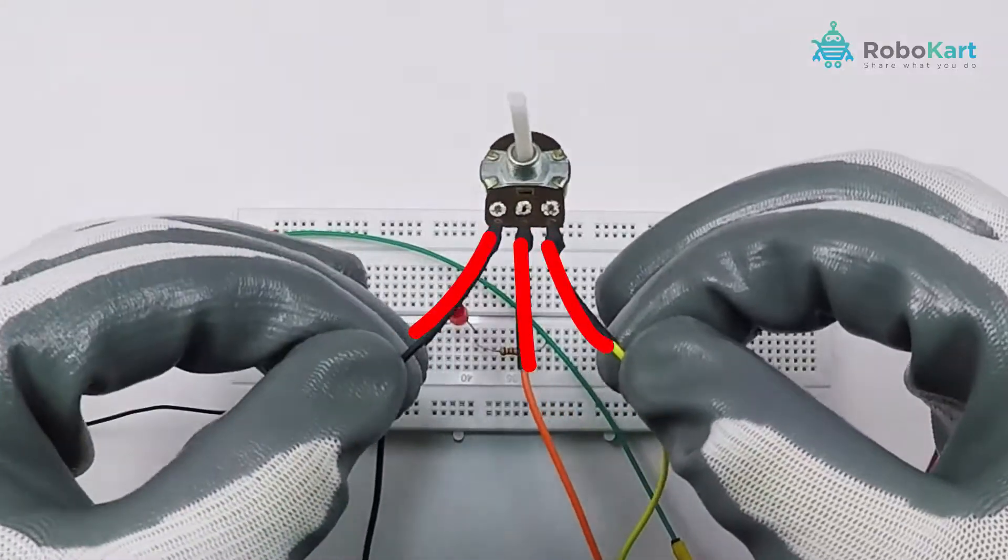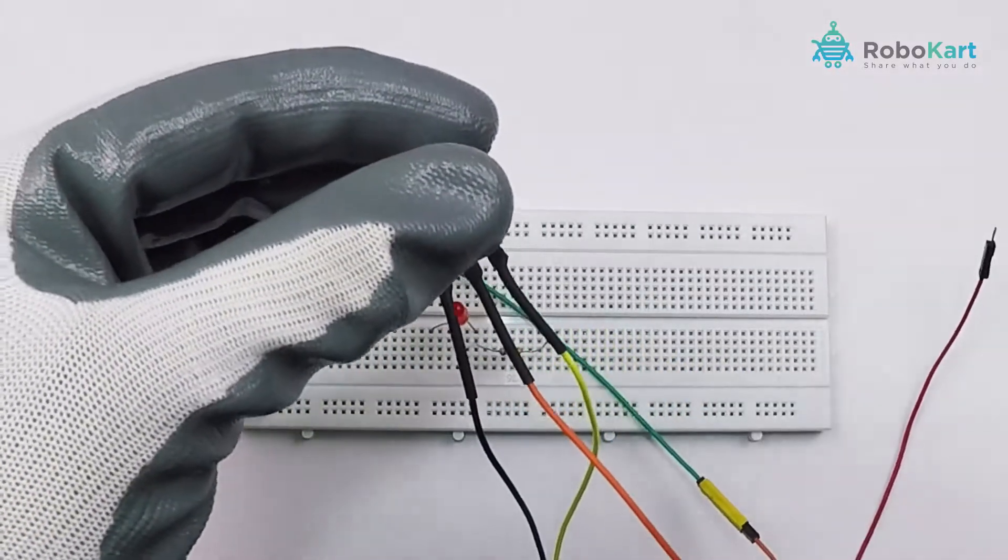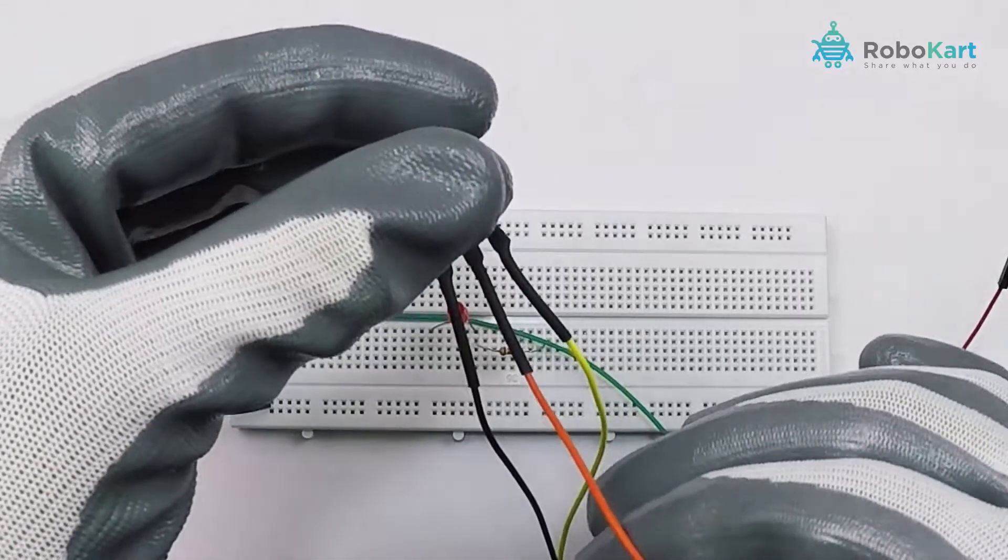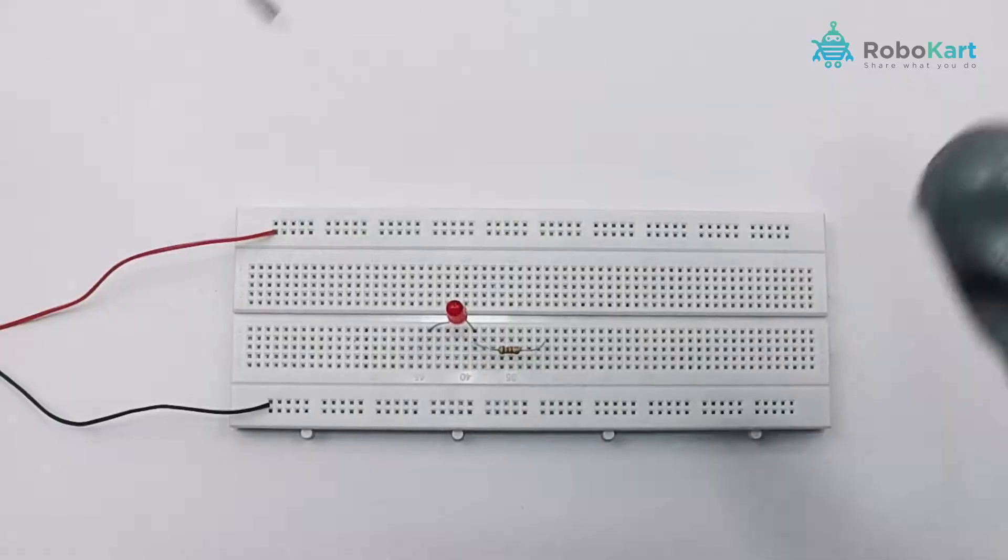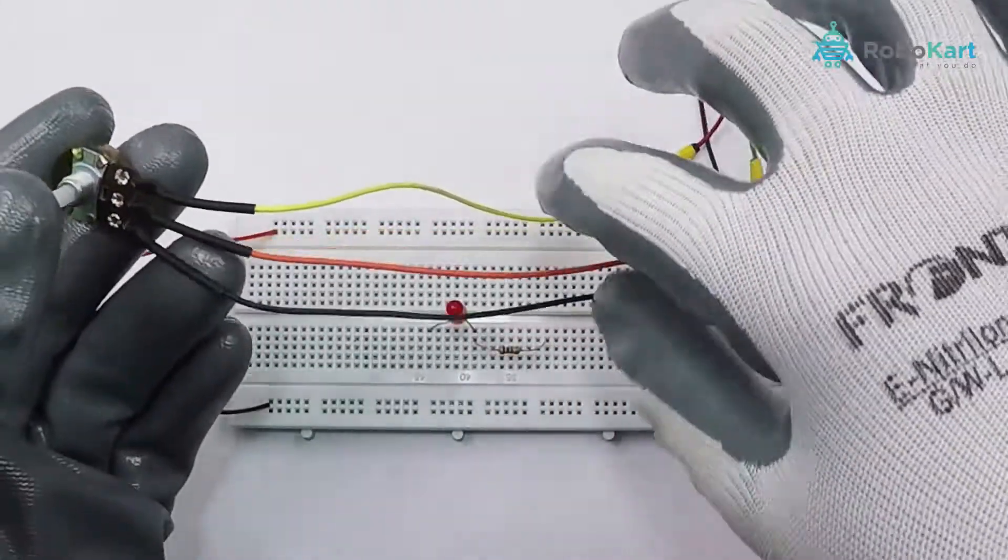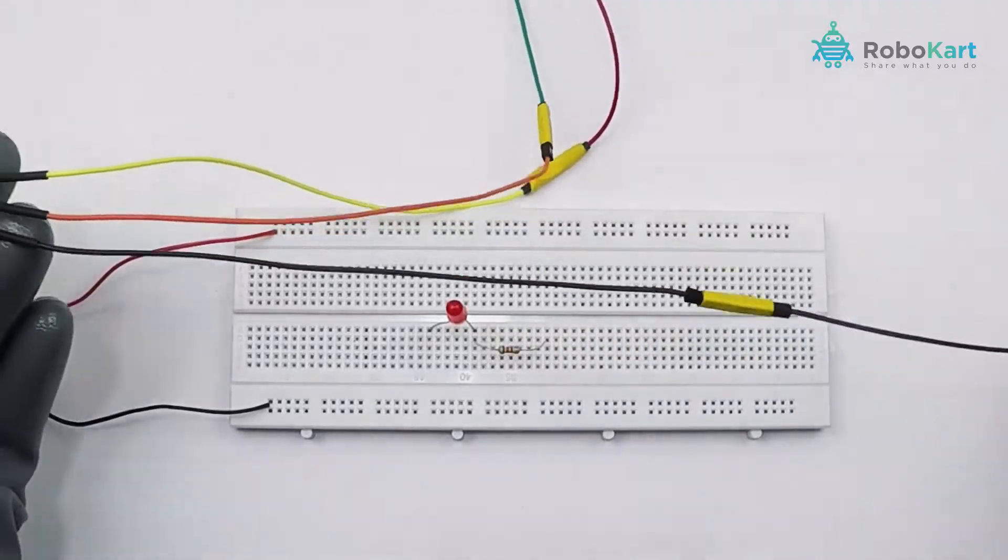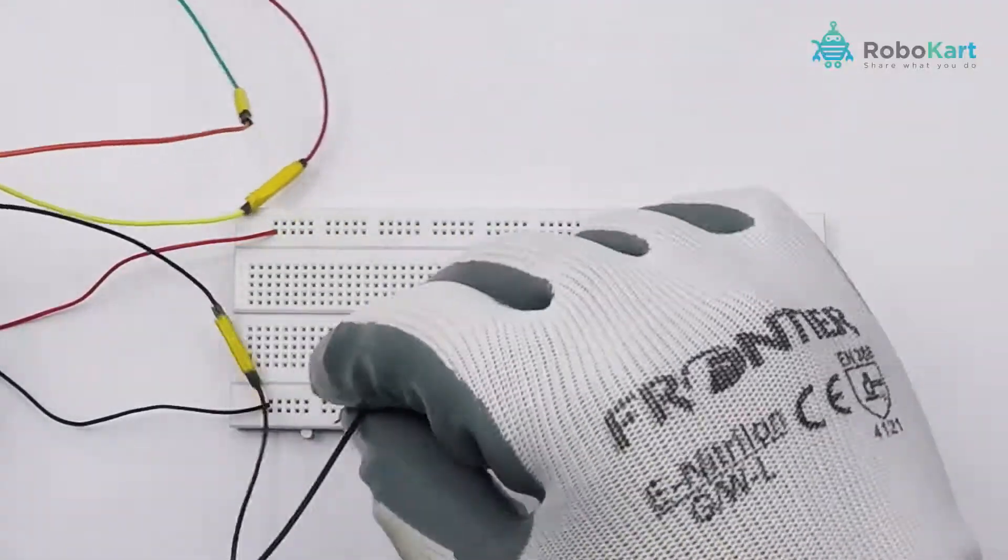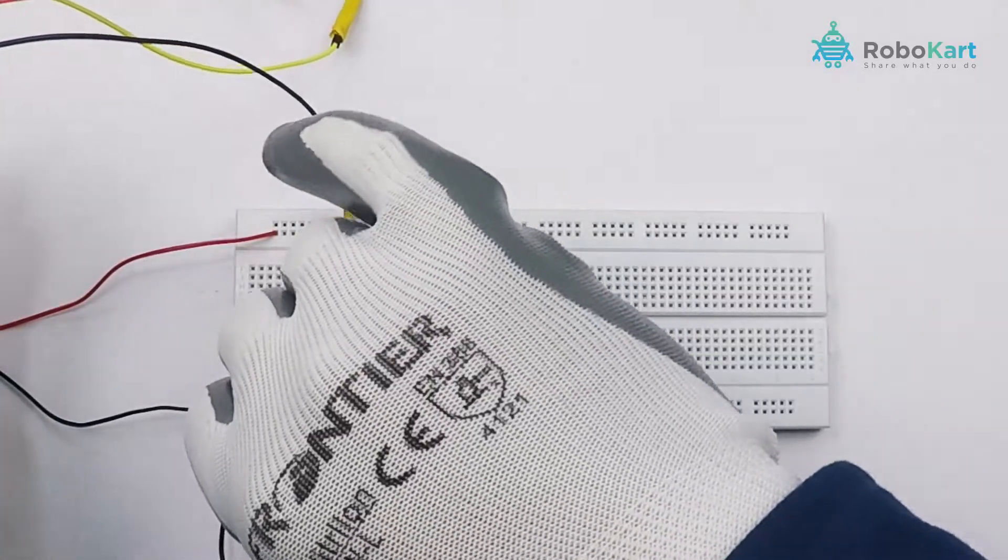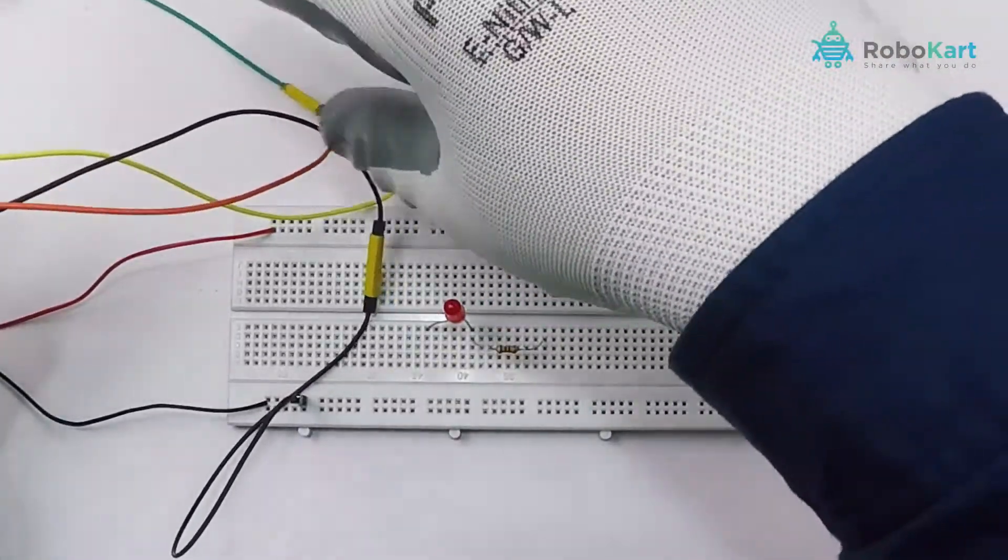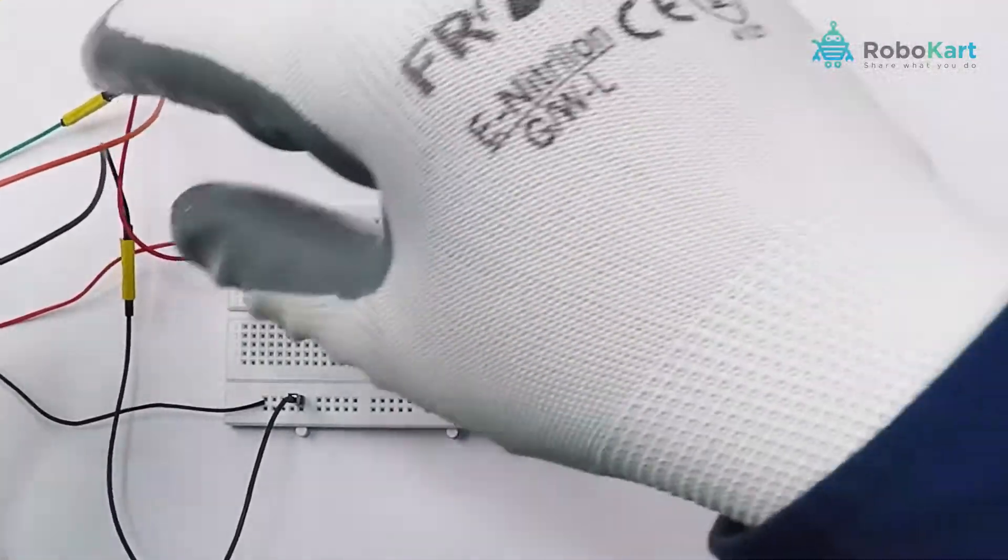There are three terminals of the potentiometer. Two outer terminals are VCC and ground and the middle one is our data pin. You have to connect accordingly. The other two terminals from both sides should be connected to the ground and positive terminals and the middle one which is a data pin would be connected to the longer pin of the LED that is to the end of the resistor.